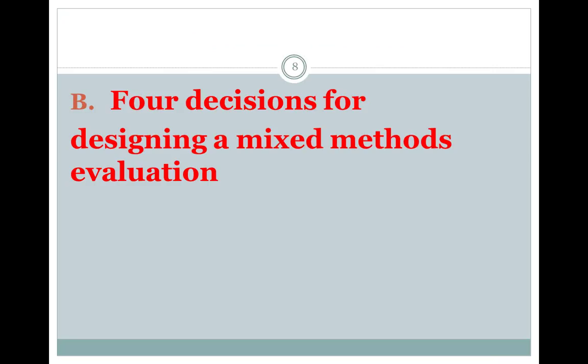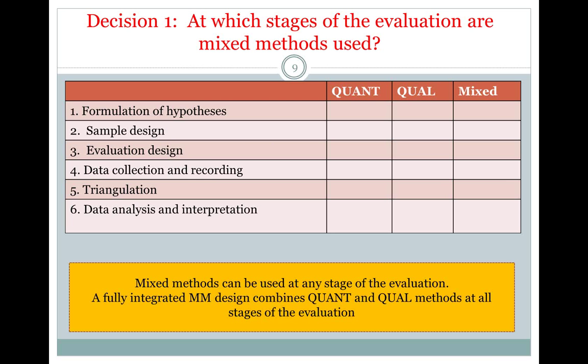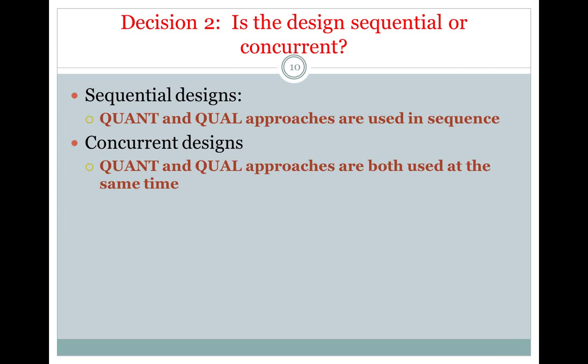The second topic covers key decisions for designing and implementing a mixed method evaluation. The first decision is to decide at which stages of the evaluation mixed methods will be used. There are at least six stages: design, implementation, and analysis — and quantitative, qualitative, or mixed methods could be used at each. So a key decision is where and to what extent you're going to use mixed methods.